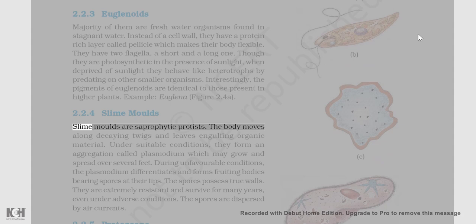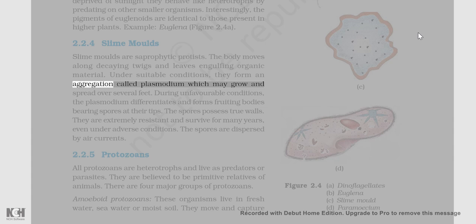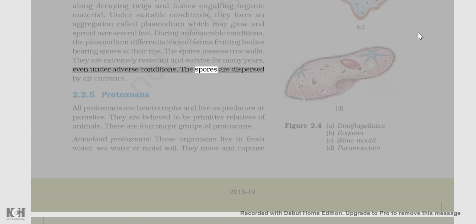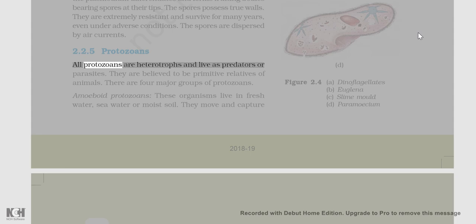2.2.4 Slime Molds: Slime molds are saprophytic protists. The body moves along decaying twigs and leaves, engulfing organic material. Under suitable conditions, they form an aggregation called plasmodium which may grow and spread over several feet. During unfavorable conditions, the plasmodium differentiates and forms fruiting bodies bearing spores at their tips. The spores possess true walls, are extremely resistant, and survive for many years even under adverse conditions. The spores are dispersed by air currents.